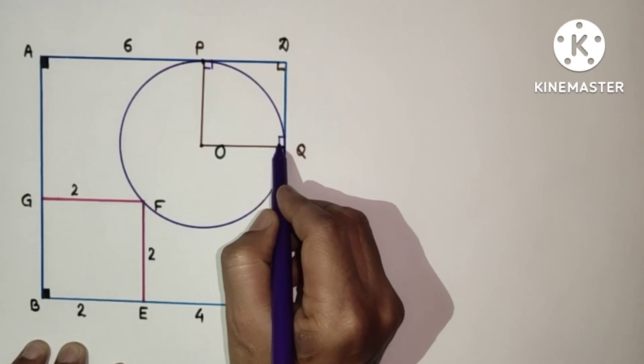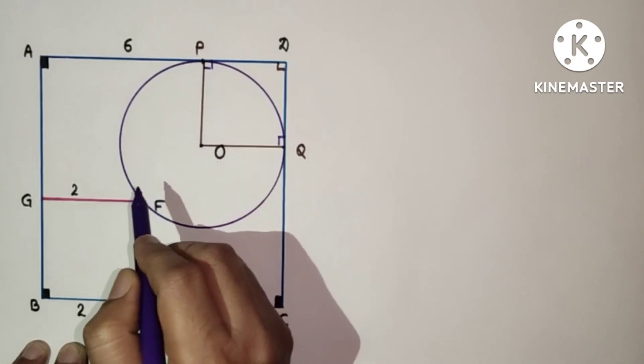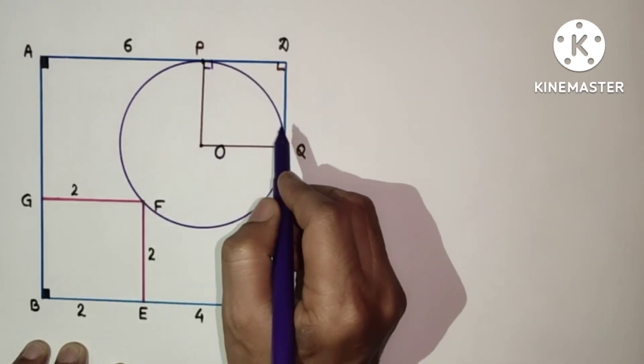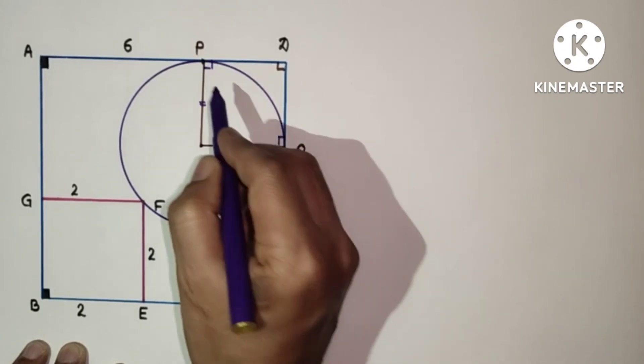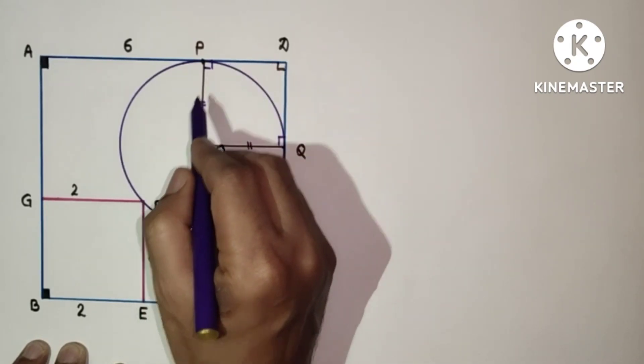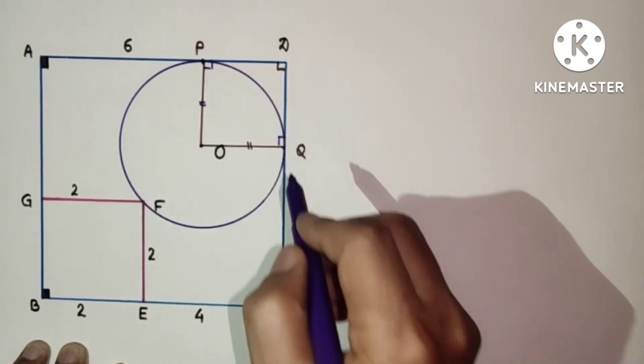So this is 90, this is 90, all angles are 90. This is a square because these two are equal, and this is a rectangle. Opposite sides are equal. So all four sides equal, so therefore it is a square.